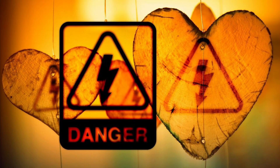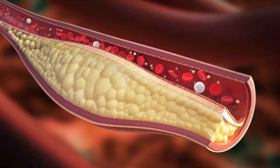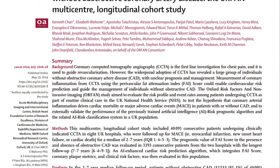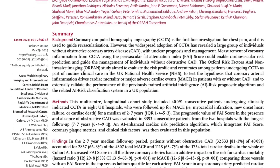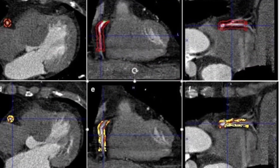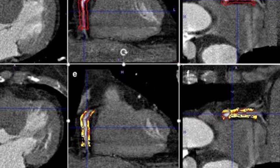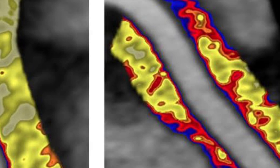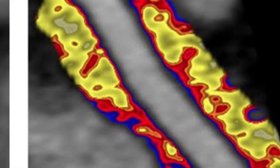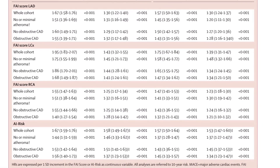Importantly, this association is independent of traditional cardiovascular risk factors and the presence or extent of coronary artery disease. The ORPHAN study evaluated the ability of the coronary perivascular fat attenuation index from coronary CT angiography — basically a marker of inflammation — to predict cardiovascular risk and guide management in individuals without obstructive coronary artery disease.